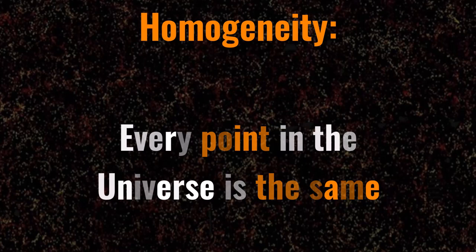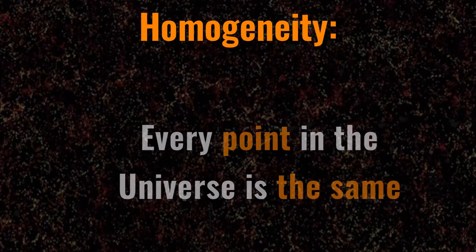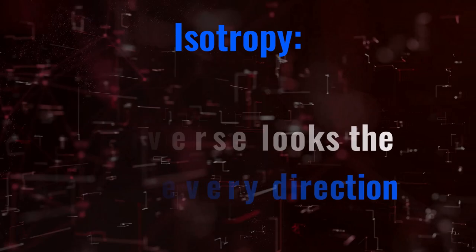Obviously, there's galaxies and stars and planets too, but compared to the masses of empty space, the universe is homogeneous. The other important feature, isotropy, means that the universe looks the same in every direction. Again, this is true.